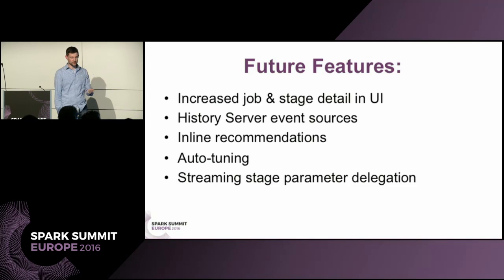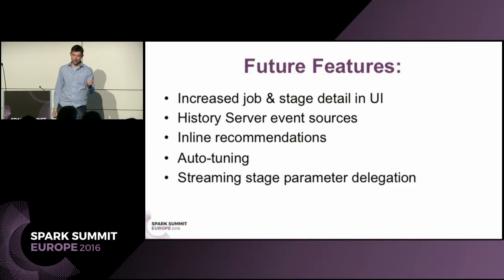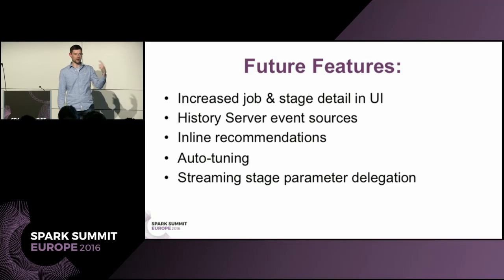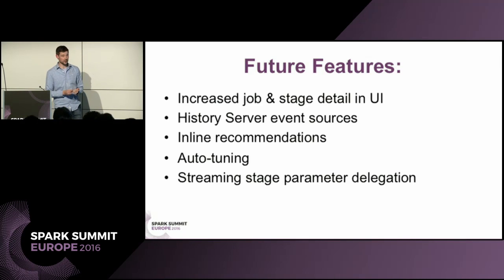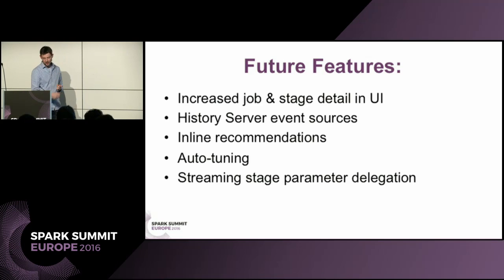We're looking to quickly introduce improved job and stage detail in the UI — a count of stages, tasks, and jobs, plus information about each, and an ability to surface the parameters each individual job was started with. All the data is there; we're just trying to get it out. For history server integration, you should be able to point SparkLint at the history server, poll for current applications, grab each application's zip file from your persistence layer, drag it to the local machine, unpack it, analyze it, and report on it. You can also do simple filtering by application name with regex filters.